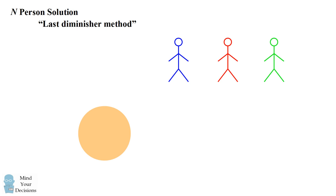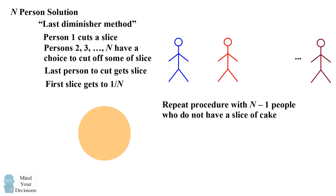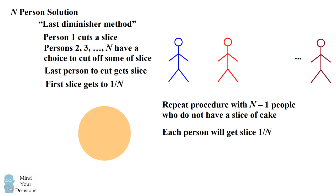This last diminisher method can be generalized if we have even more people. It works inductively. Person one first cuts the slice, and then the people after that can inspect the slice and decide whether to cut off a little bit. The same rule applies that the last person to cut the slice is the one who's going to end up with it. The procedure is going to give the incentive that the first slice is going to be getting to one over N of the cake. We then repeat the procedure after that one person gets the slice, and then the remaining people are going to use the same method to cut the next slice. And for the very same reason, the next slice is also going to be one over N, and so on. We keep repeating this until there are exactly two people remaining, at which point they do the I cut you choose method, and they are also going to end up with one over N of the cake.